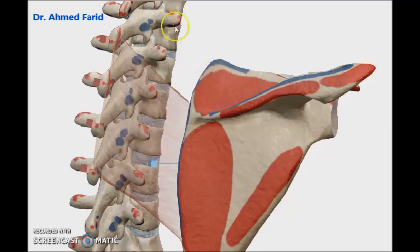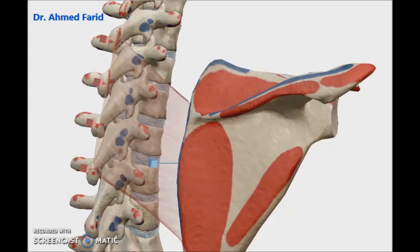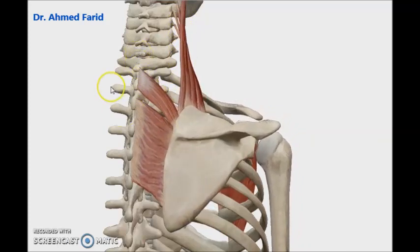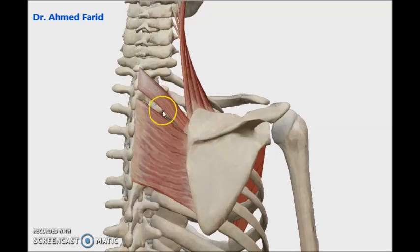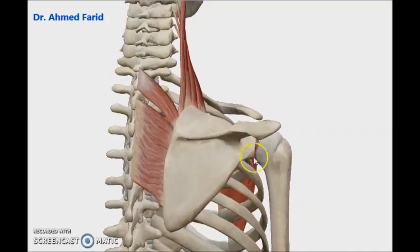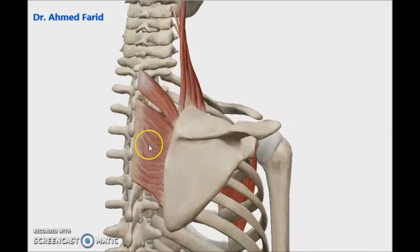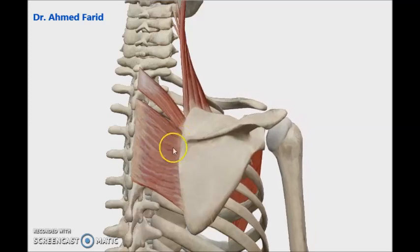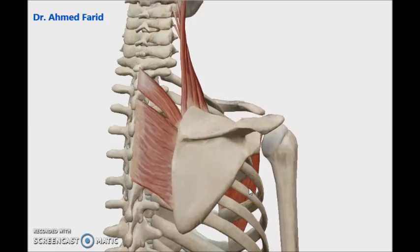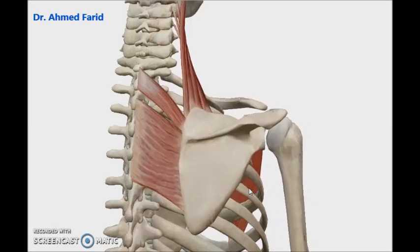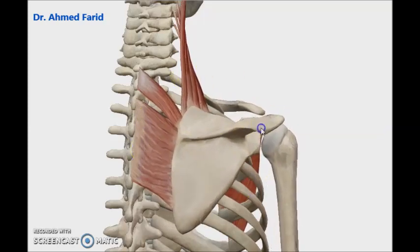If levator scapulae, rhomboidus minor, and rhomboidus major act together: levator scapulae elevates the scapula while the rhomboids retract it. Together, these three muscles pull the medial border of the scapula upward, causing downward rotation of the scapula and downward tilting of the glenoid cavity. This combined action is also assisted by pectoralis minor.